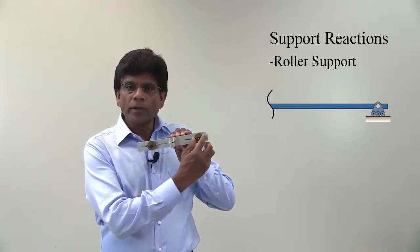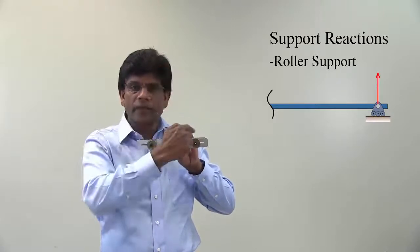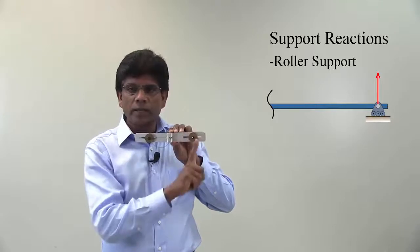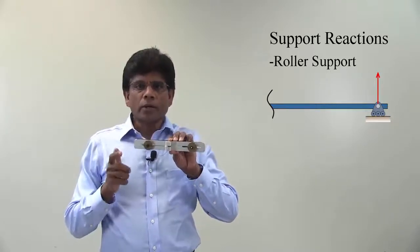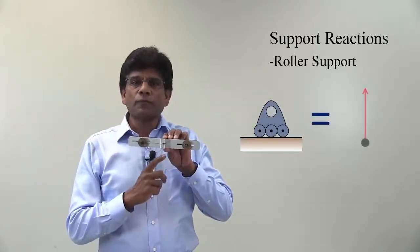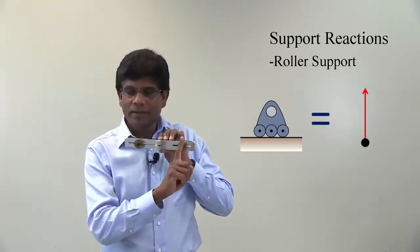The support resists translation motion along the axis perpendicular to the surface. This means it has only one support reaction along this vertical axis. So this is how we are going to treat roller support from now onwards. Any time you see a roller support, replace that with a force in the direction where the motion is resisted.